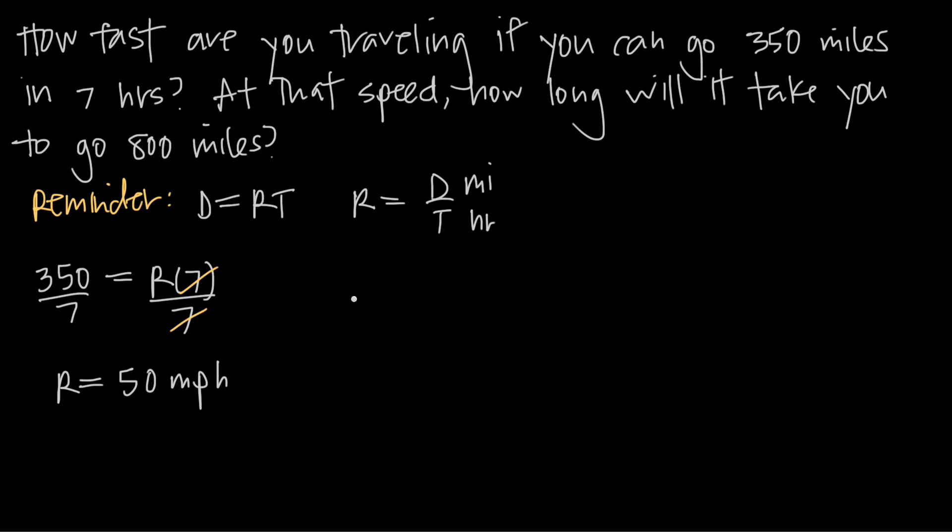So we know we need to go 800 miles. We plug that in for distance, d. So we have 800 is equal to rate times time. Well, we know that our rate is 50 miles per hour, and the question asks us, how long will it take you? So time is the unknown. So we leave time there, so we get 800 is equal to 50t.